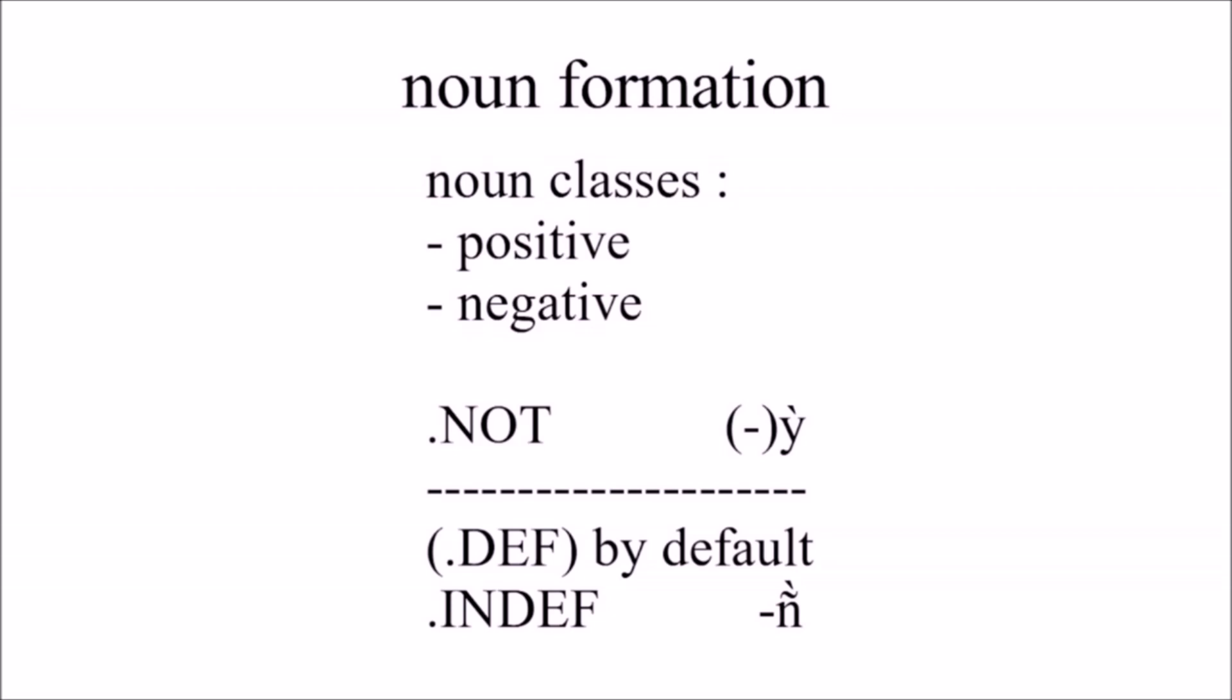And then after that, you might have a definiteness marker, which might be none by default, which is going to be definite. And it's going to be indefinite if you put the marker, which is pronounced prrr.